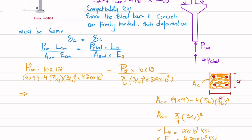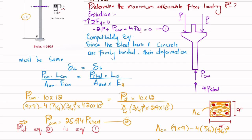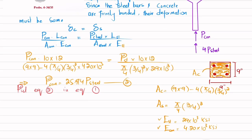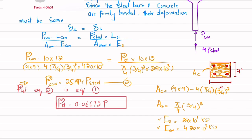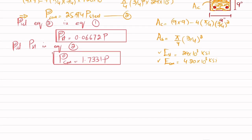Solving this, we get P_concrete = 25.749·P_steel. This is equation number two. Substituting equation two into equation one, we get P_steel = 0.06672·P. Then substituting back into equation two, P_concrete = 1.7331·P. We now have both P_concrete and P_steel expressed in terms of the applied load P.